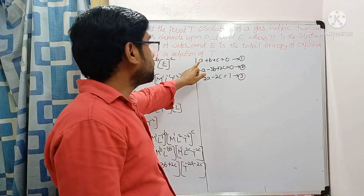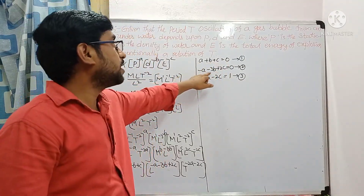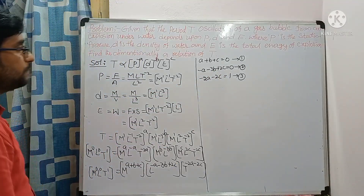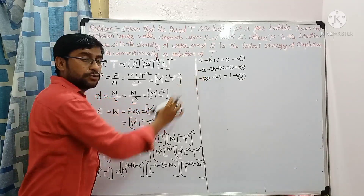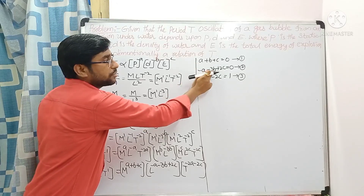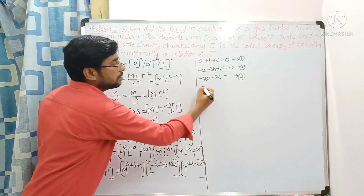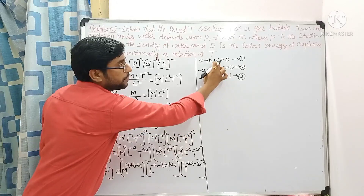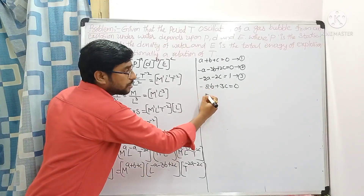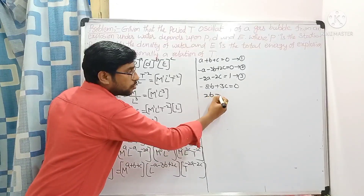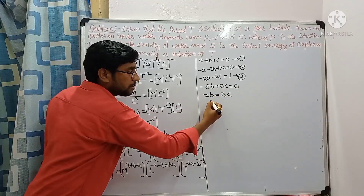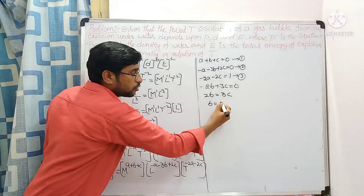The three equations are: (1) a plus b plus c equals 0; (2) minus a minus 3b plus 2c equals 0; (3) minus 2a minus 2c equals 1. Solving equations 1 and 2 by adding them: the a terms cancel, giving minus 3b plus b plus 2c plus c equals 0, which is minus 2b plus 3c equals 0. So b equals 3c by 2.